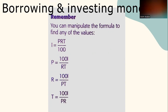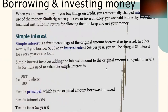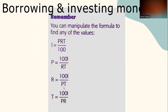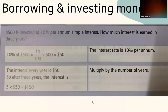You can manipulate the simple interest formula to find any of the values. To find interest: I = PRT / 100. To find the principal: P = (100 × I) / (R × T). To find the interest rate: R = (100 × I) / (P × T). The question is basically all about the formula — it is given, but you have to remember it.